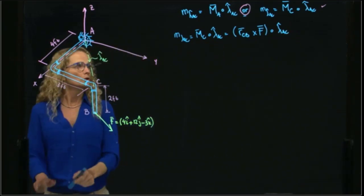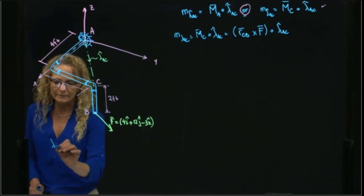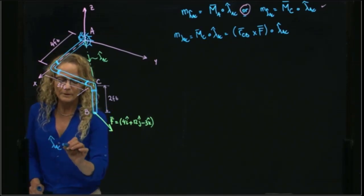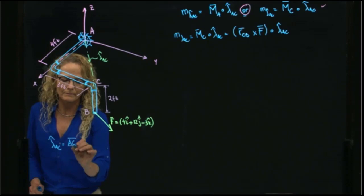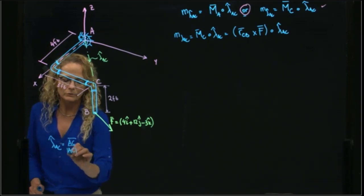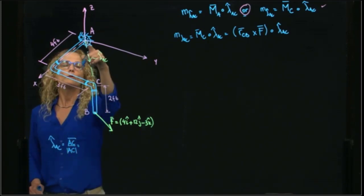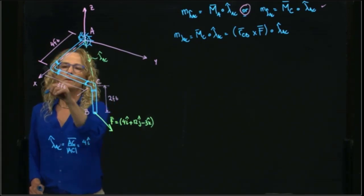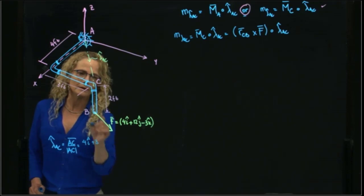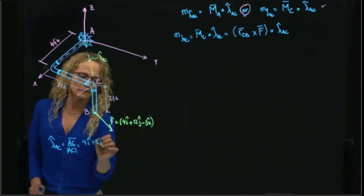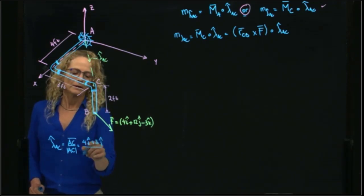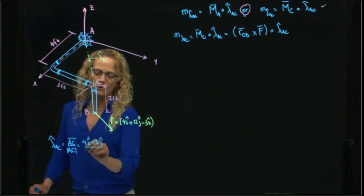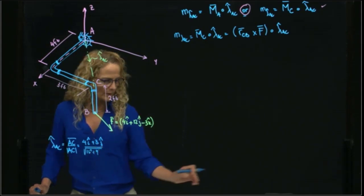Let me do it right here. This unit vector AC will be the vector AC divided by the magnitude of the vector. So to go from A to C, I cover 4 feet in i plus 3 feet in j, and I divide that by the square root of 16, which is 4 squared, plus 9, which is 3 squared.